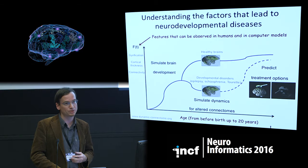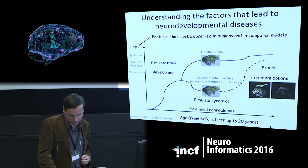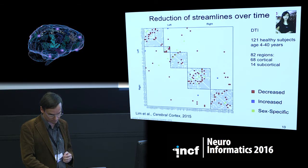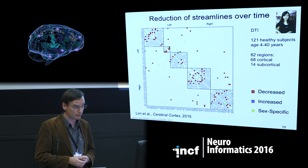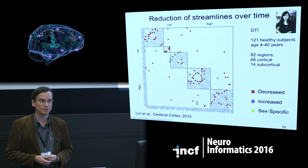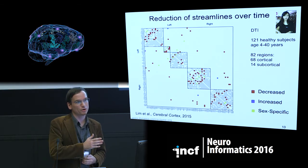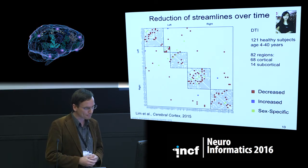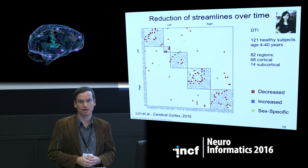We aim to use this information to predict how to treat patients. Starting with healthy brains, we looked at diffusion tensor imaging data — structural connectivity in 121 healthy subjects aged 4 to 40 years. These are cross-sectional snapshots, not longitudinal data over 30 years. We tested which connections and fiber tracts are changing over time in this age range.